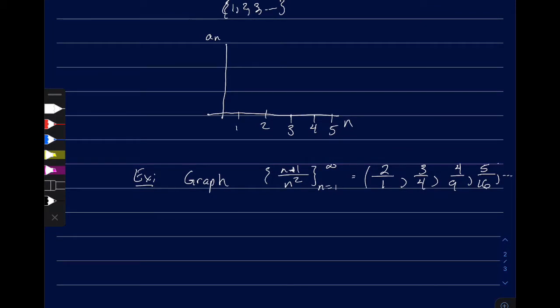Now let's plot this. When n is 1, a sub n is 2, so 1, 2, maybe here. When n is 2, x is 3 fourths. Then it's 4 ninths at 3, which is a little less than a half, then 5 sixteenths. If we wanted to look at the next one, it would be 6 over 25, so it would get closer and closer to zero. We will pick that up next time when we talk about the limits of sequences.